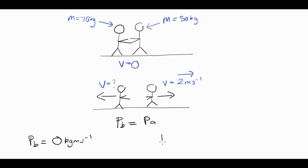P after, the momentum after the collision, is the momentum of the 50 kilogram person, which is their mass times their velocity: 50 times 2. We also have the momentum of the 70 kilogram person, which is 70 times the unknown V. V is what we're trying to calculate.